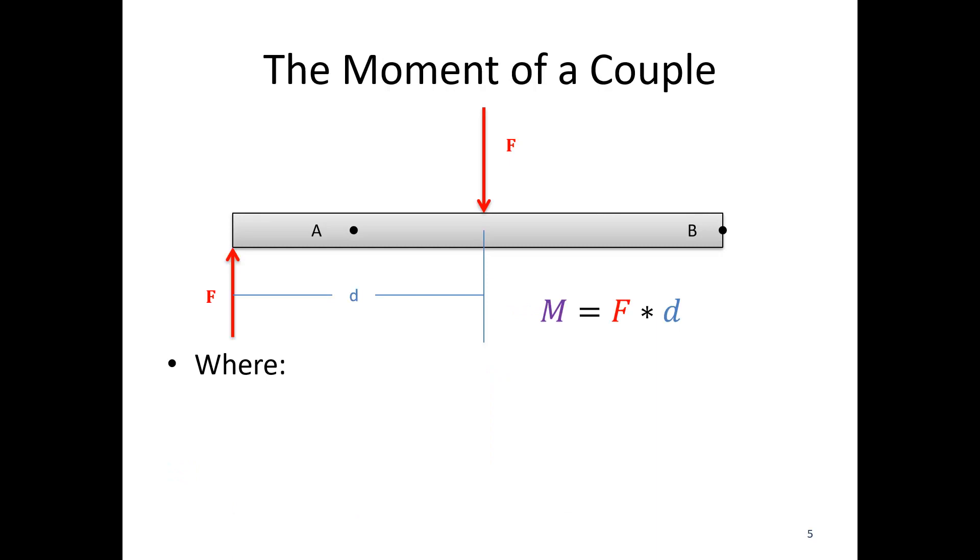So what is the moment of a couple? Well, the moment of a couple is still going to use the equation force times distance, but here we're going to redefine what some of these things mean. So M is the moment exerted by the couple about any point. So the moment about A, the moment about B, the moment about C, whatever point we want. F is the magnitude of each force.